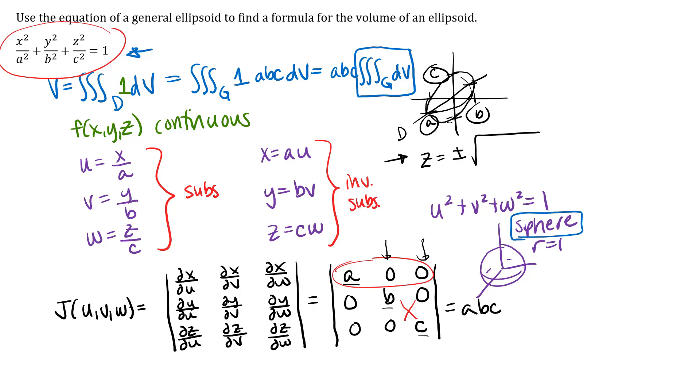Since g is a sphere of radius 1, you actually probably know the volume of that. Alright, so we end up with the volume formula of an ellipsoid given by this expression here.